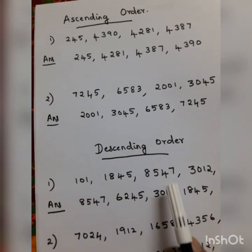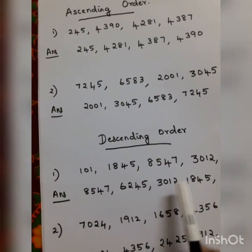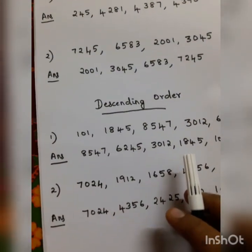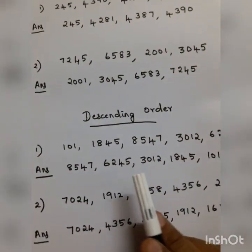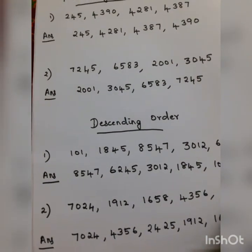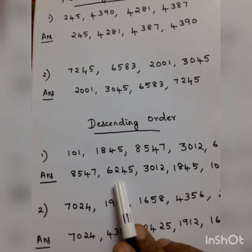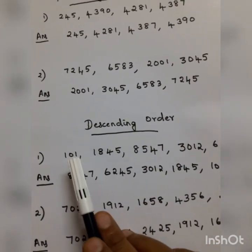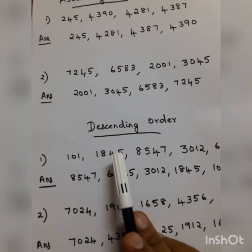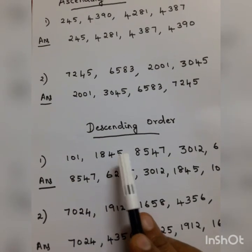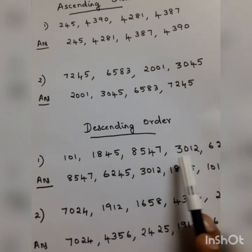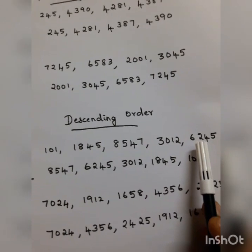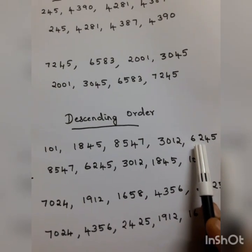Ascending order starts from 1,000. Next is descending order. Descending order means arranging from big to small. The numbers are 101, 1,845, 8,547, 3,012, and 6,245.